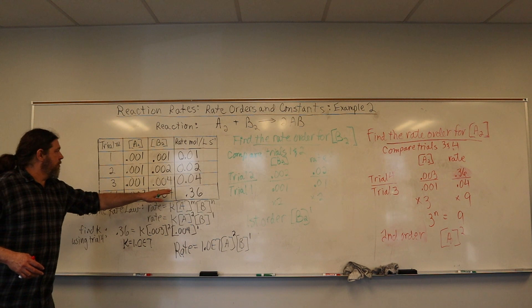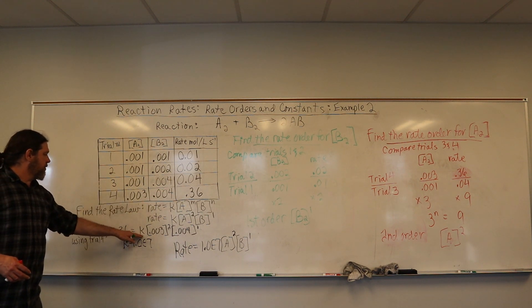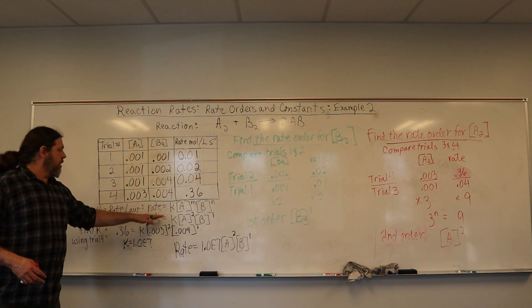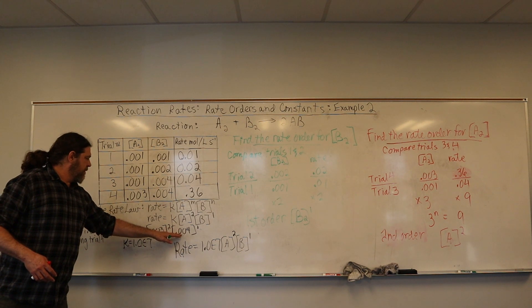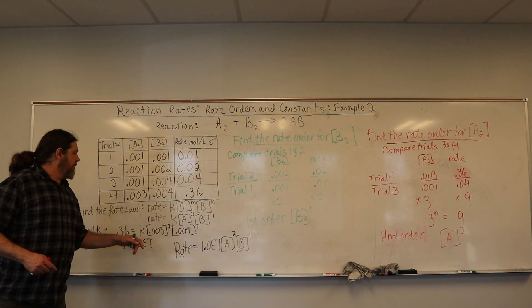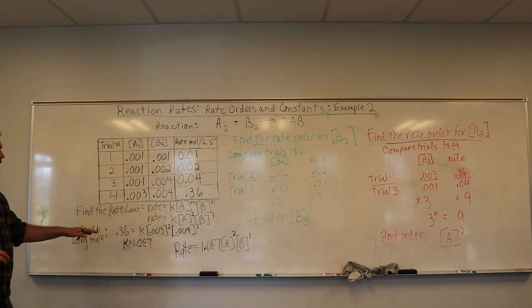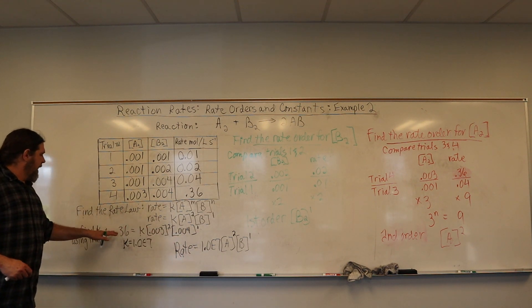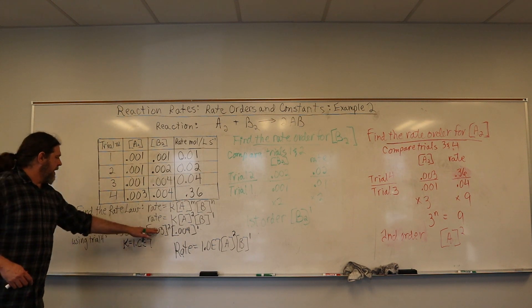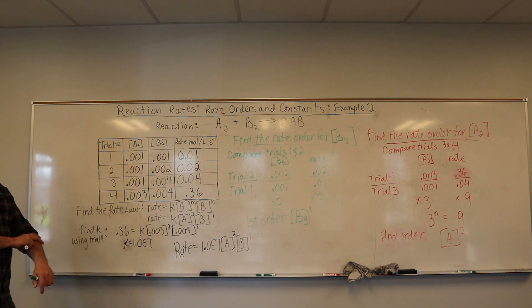So we simply plug in the results. Here's the rate equals K times A squared times B. And we don't forget that it's B times B, not B squared. And we manipulate the data algebraically, this side divided by that side, and we get a large constant of 1 times 10 to the 7th power.